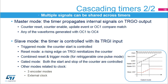In slave mode, the timer operating mode is controlled by the TRGI input. In triggered mode, the counter start is externally controlled, used for simultaneously starting multiple timers. In reset mode, the counter is reset by a rising edge on the TRGI input, typically for variable frequency PWM operation. A combined mode including reset and trigger can be used for retriggerable one-pulse mode generation. In gated mode, the counter is active only while the level on the input signal is high, coming from an input or from another timer in waveform generation mode.